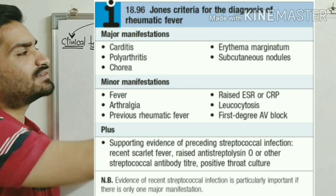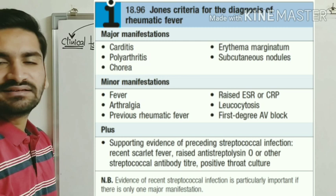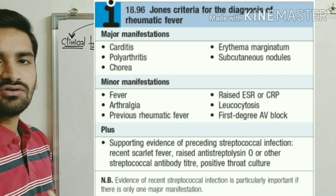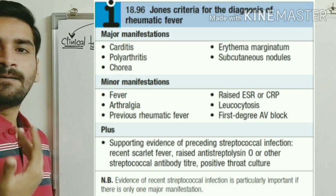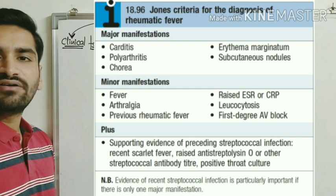If 2 major criteria or 1 major and 2 minor criteria are present, the patient is considered to have acute rheumatic fever. Additionally, evidence of prior Group A Streptococcal infection — such as raised antibody titers in blood or a positive throat swab — should also be present. This is all about the modified Jones criteria.